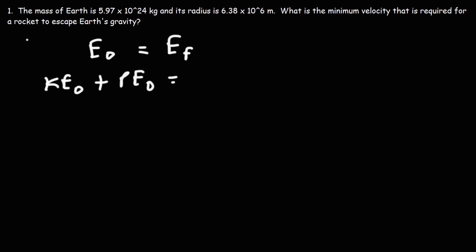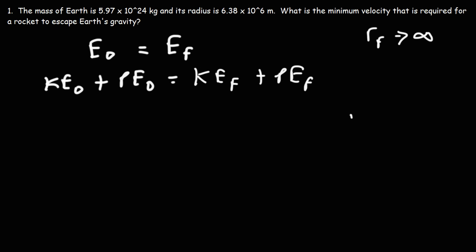That is going to equal the final kinetic energy plus the final potential energy. In order for the object to escape Earth's gravity, the distance is going to be essentially infinitely far. Potential energy can be described by this equation — it's equal to the gravitational constant times the mass of the rocket times the mass of the Earth divided by the distance between them.